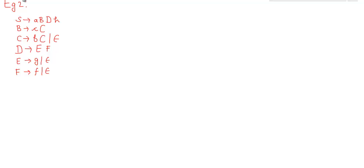In the last tutorial we saw an example; in this tutorial we will give a new example. Here we have the grammar where S is a non-terminal which produces a, B, D, h — here a and h are terminals while B and D are non-terminals. Then B produces small c and capital C; small c is a terminal and capital C is a non-terminal. Then capital C produces small b, capital C, or epsilon. D produces EF where all are non-terminals. Now let us start with the calculation of the first set.